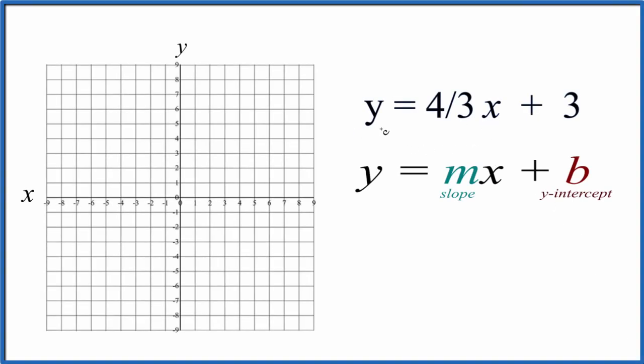If you're asked to graph the equation y equals 4/3 x plus 3, here's how you do it. We're going to use slope-intercept form to graph this equation. You could use a table of values. I find that slope-intercept form is a lot easier, especially since we have this fraction here in our equation.